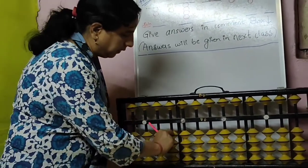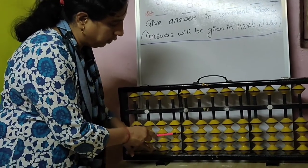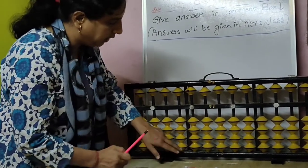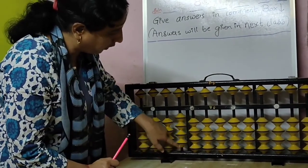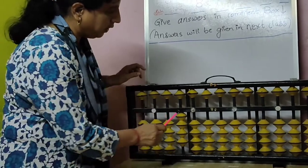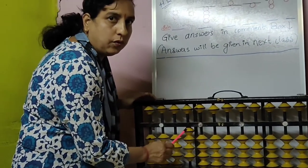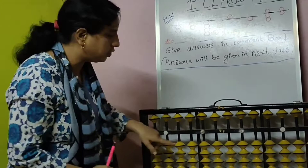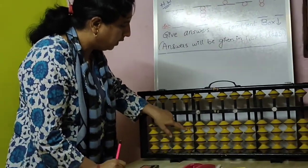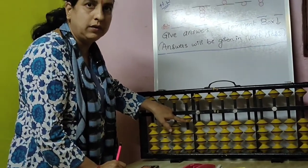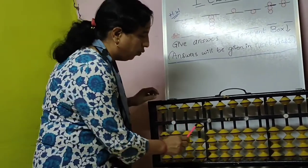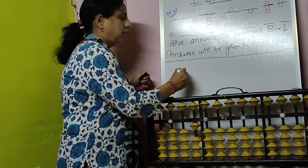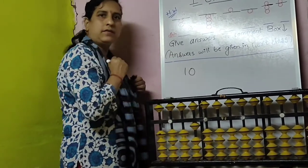Now clean the abacus — forty. How to do forty? 1, 2, 3, 4 — ten, twenty, thirty, forty. Forty. 4, 0 — forty. How to do ten — I will show one more time. With index finger, only one bead — 1, 0 is ten.